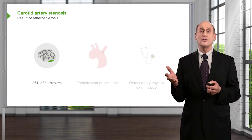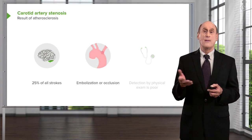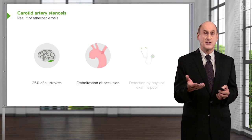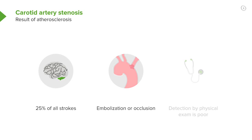Stroke can also be the result of embolization from the left atrium in atrial fibrillation — that's also a common cause of stroke. Detection by physical exam of the narrowing is very poor. Sometimes you'll hear a bruit, a turbulent blood flow — a sort of 'ch, ch, ch' when you put your stethoscope over the neck. But often there's no sound.